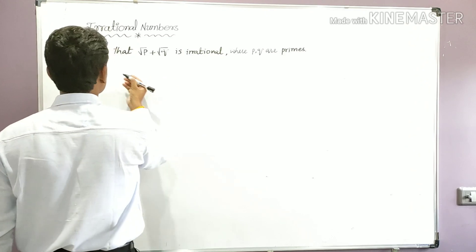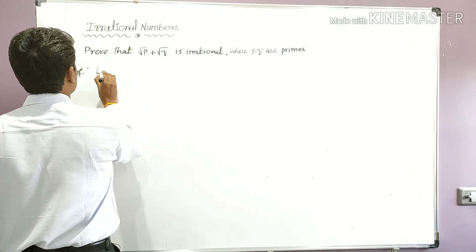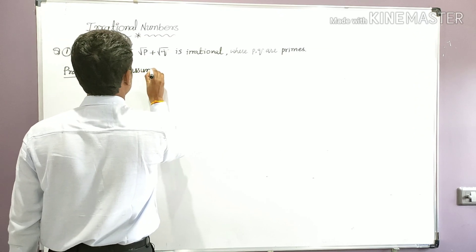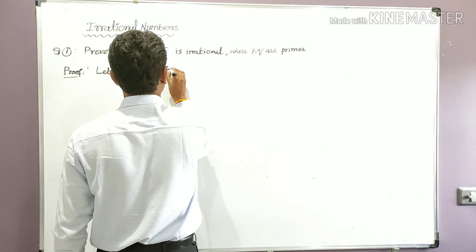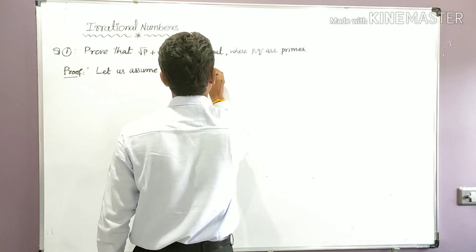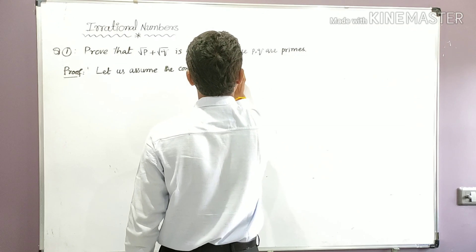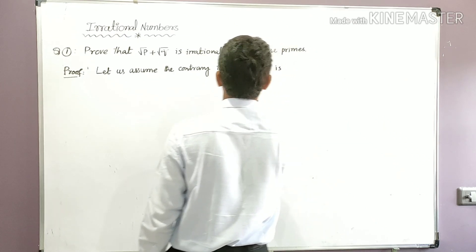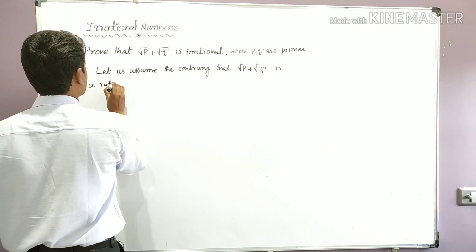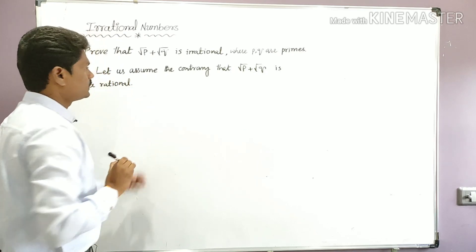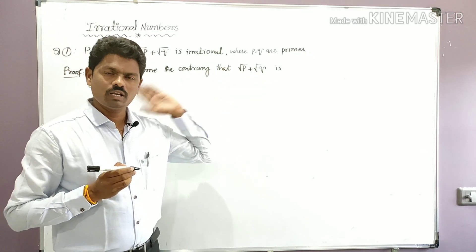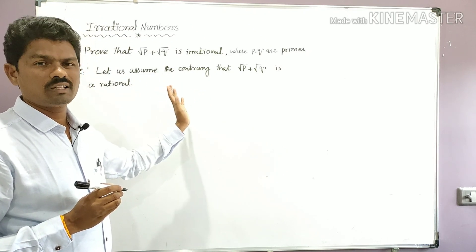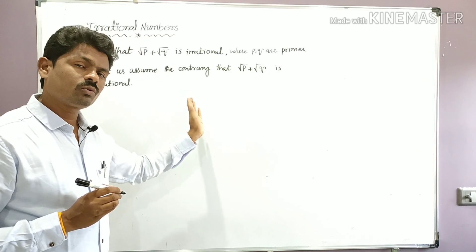Let us assume the contrary. This first step is the same for all models. Let us assume the contrary that √p + √q is a rational number. If it is a rational number, according to the definition of rational numbers, every rational number can be written in the form a/b. Therefore, √p + √q = a/b.